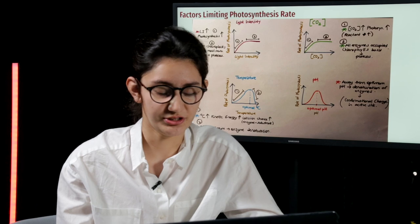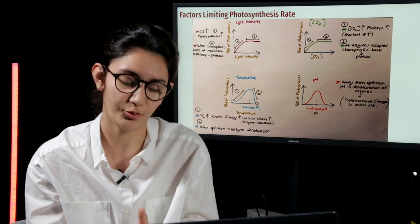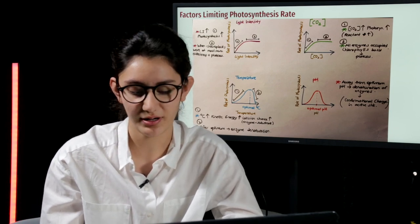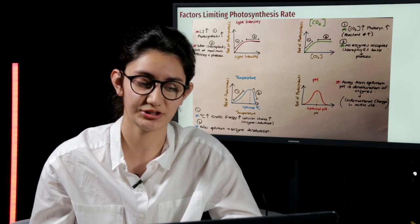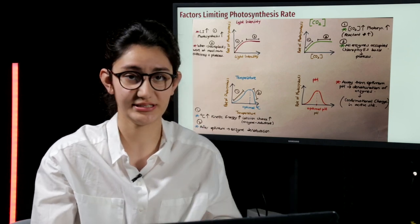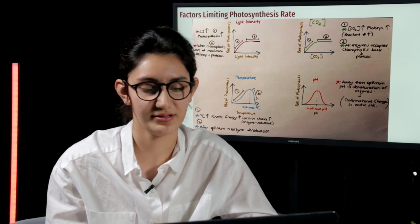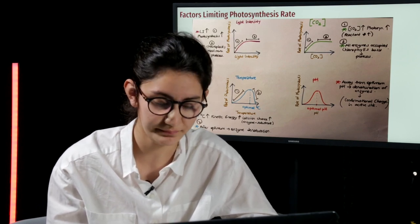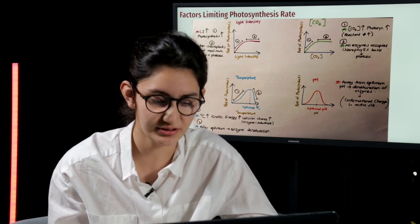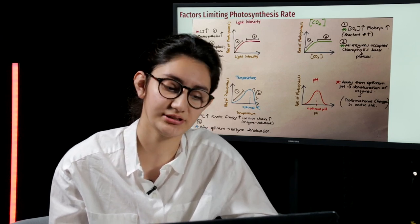Whereas in temperature, when the temperature increases, the rate of photosynthesis increases up to a point, up to the optimal temperature. After that optimal temperature, if we continue increasing the temperature, the rate of photosynthesis will abruptly decrease. In the first part, it increases because the kinetic energy of the molecules increased, which results in an increase in the chance of collision of enzymes and substrates. However, after the optimal temperature, the enzymes will start to denature. Therefore, the rate of photosynthesis will decrease.